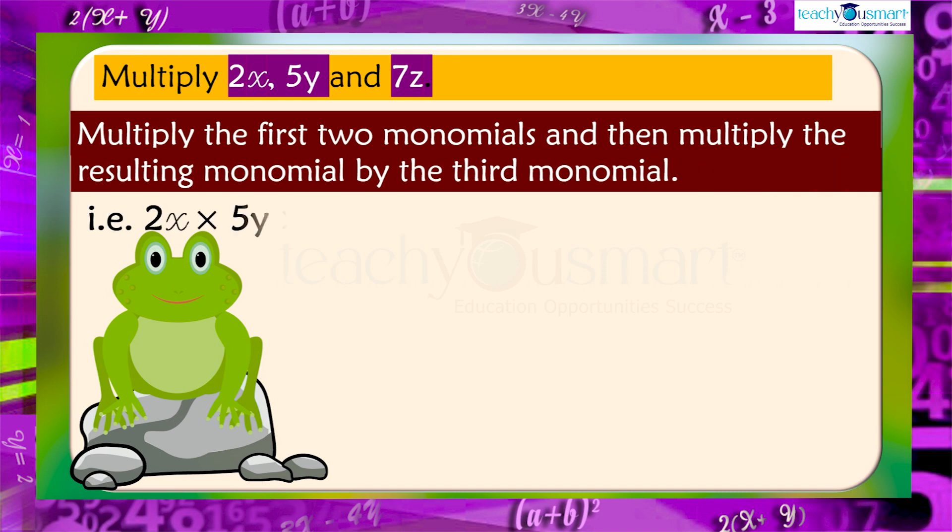That is, 2X multiplied by 5Y, multiplied by 7Z. Equals 2X multiplied by 5Y, multiplied by 7Z. Equals 10XY, multiplied by 7Z. Equals 70XYZ.